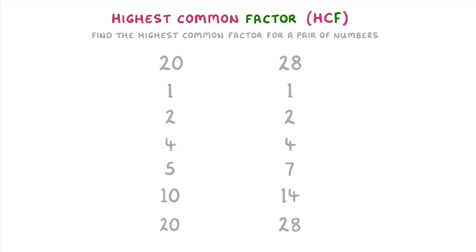So, to find the highest common factor, we just need to look for the biggest number that occurs in both of these lists, which is 4. So, 4 is the highest common factor of 20 and 28.